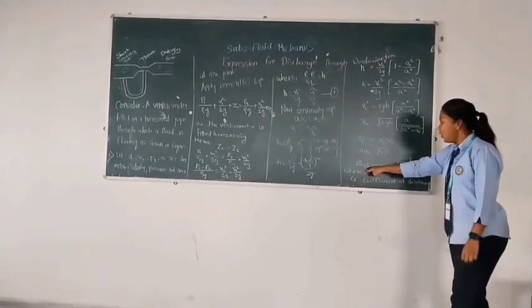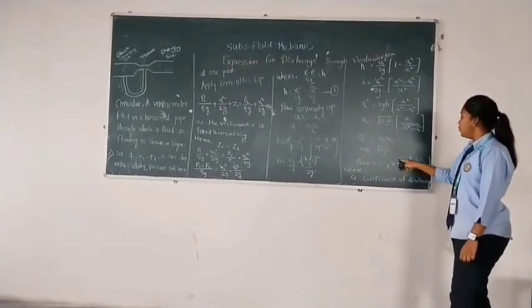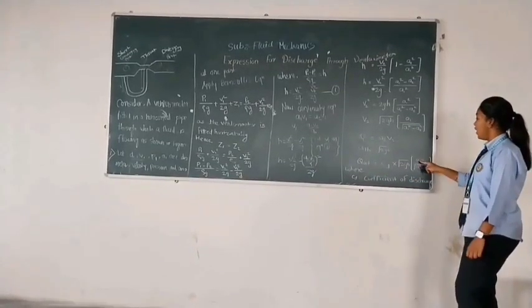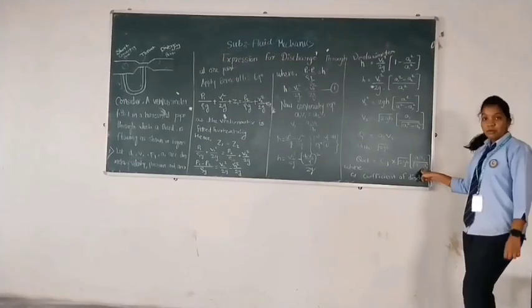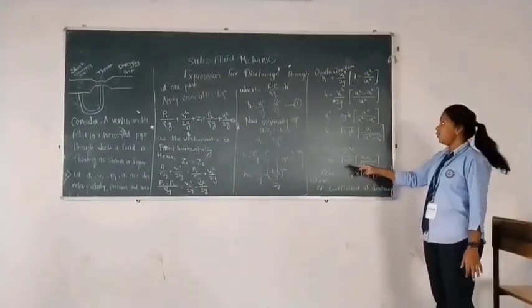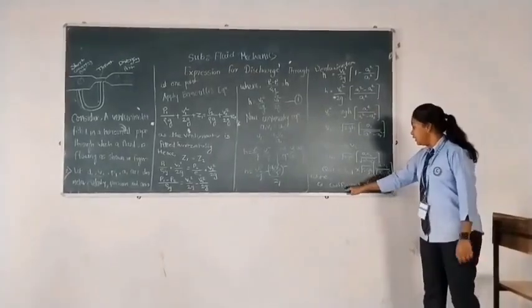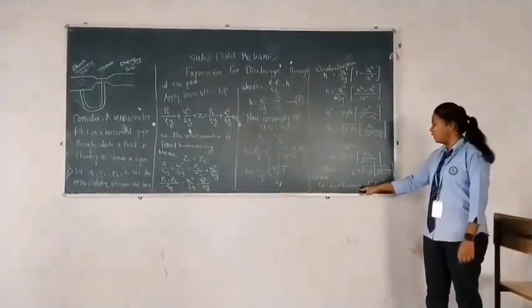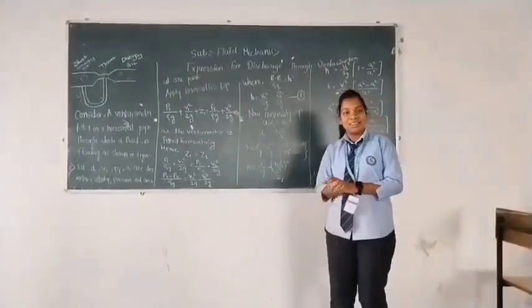Similarly, Qactual, the actual discharge, equals Cd · A1·A2·√(2gH)/√(A1² - A2²). Here we got the final equation for the expression for discharge through venturi meter. Cd is the coefficient of discharge, and the coefficient of discharge is always less than 1. Thank you so much.